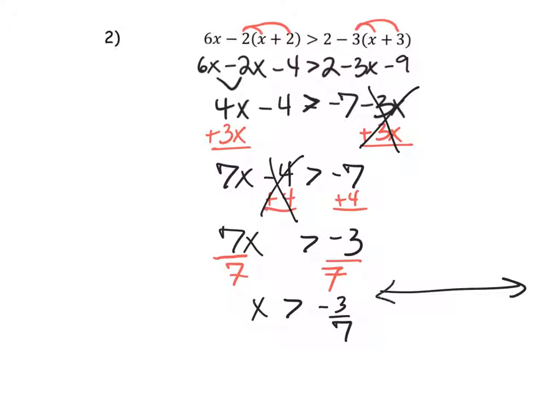If I had to graph that, just because it's difficult, I want you to see it. It'd be on the negatives, it'd be about negative half. Open circle, greater than, like that. Okay, good.